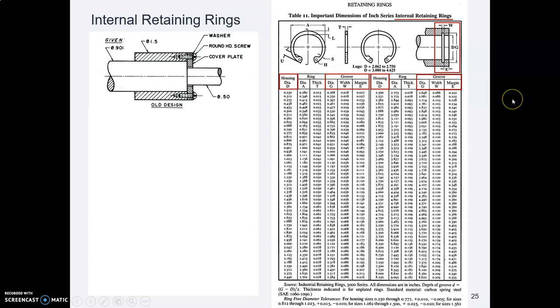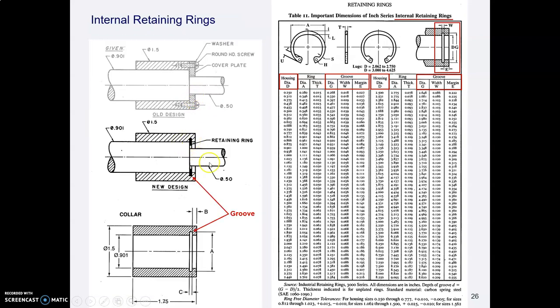And we can do the same thing for internal retaining rings. And here was an old clunky design by the way. Here's a new design with an internal retaining ring. And so what we do here is we machine a groove inside the hub or whatever it is and then we put an internal retaining ring in there. And again here's the picture for looking up how to find the dimensions you're after.